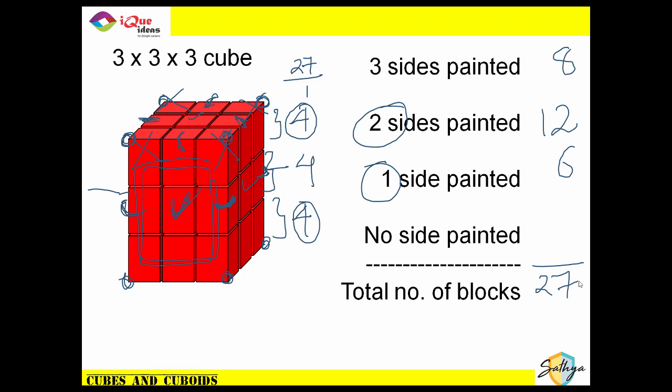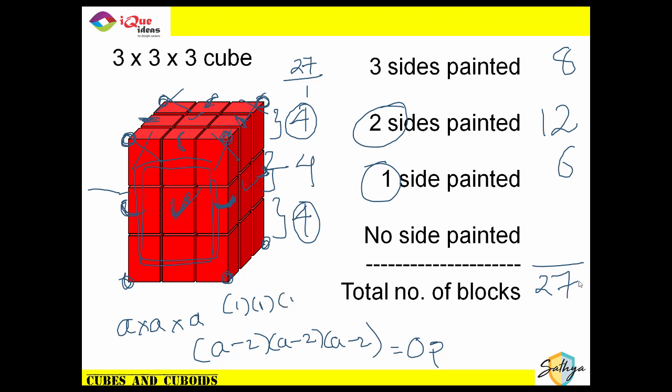For zero sides painted, use the formula: (a−2)×(a−2)×(a−2) where the original cube is a×a×a. If the result is negative, the answer is zero. For a 3x3x3 cube: (3−2)×(3−2)×(3−2) = 1×1×1 = 1 block with zero sides painted. Verification: 8 + 12 + 6 + 1 = 27. The calculation is correct.